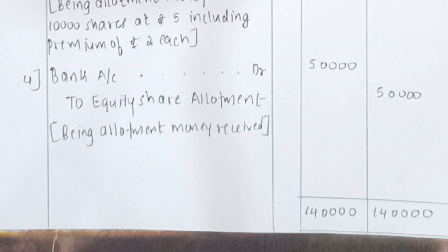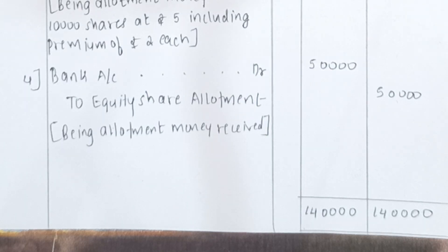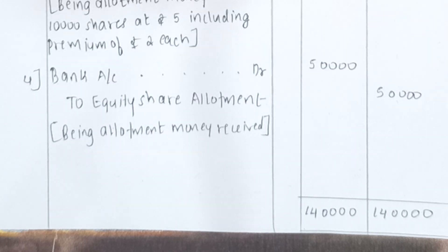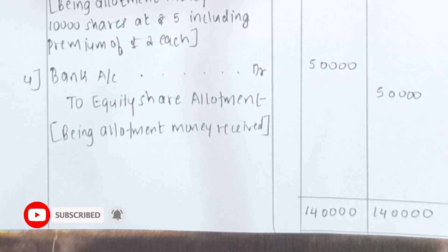Remember, whenever there is premium in the problem, write the allotment entry as: Equity Share Allotment Account debit to Equity Share Capital and to Security Premium. Premium will always be on the credit side. In today's session we discussed how to solve problems on issue of shares at premium. In the next session, we will discuss issue of shares at discount. If you have any queries, please ask in the comment section. If you liked today's video, please like, share, and subscribe to my channel. Thank you.